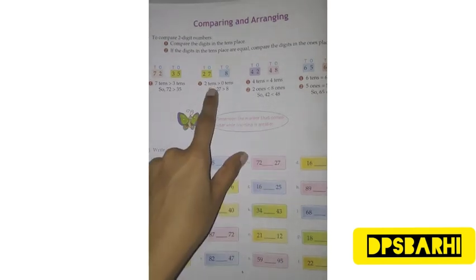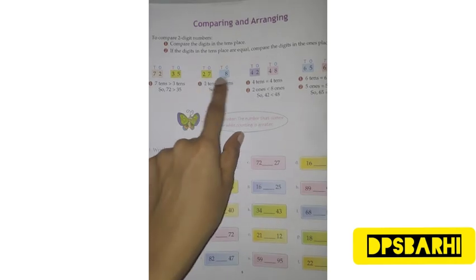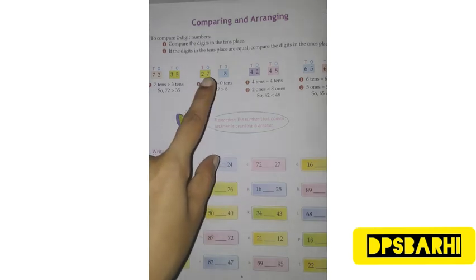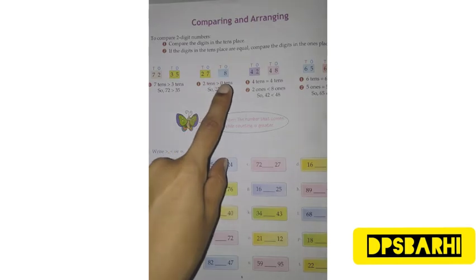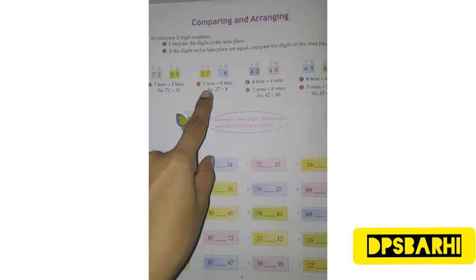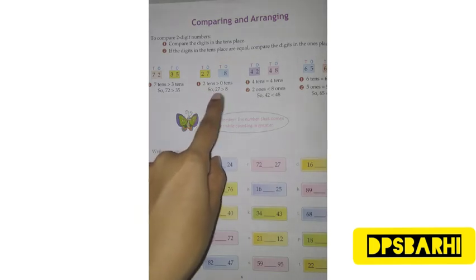In the same manner, the second example has been given. Here the tens place digit is 2 and here the tens place digit is nothing. In the ones place, 7 is given and in the second number ones place 8 is given. It means 2 tens and 0 tens. 2 tens is greater than 0 tens, so this one is the greater number.